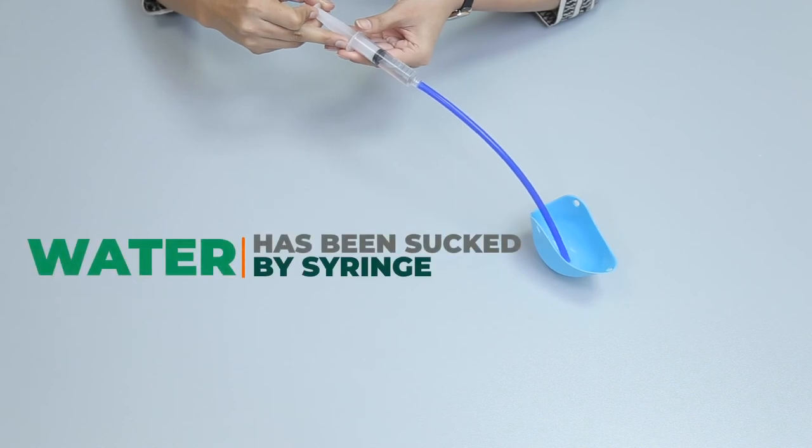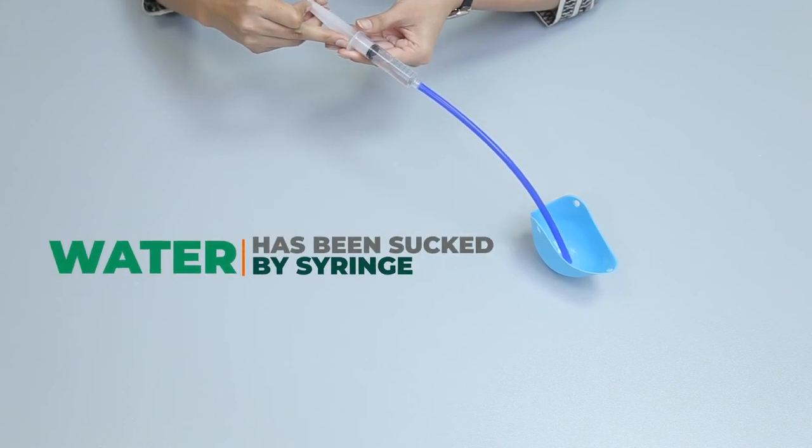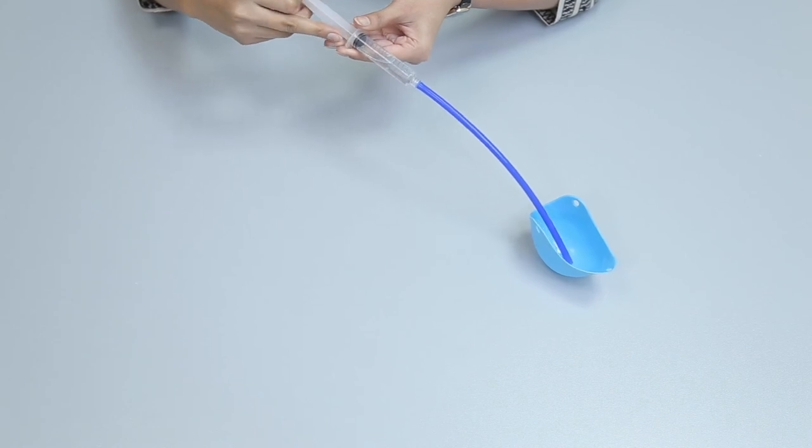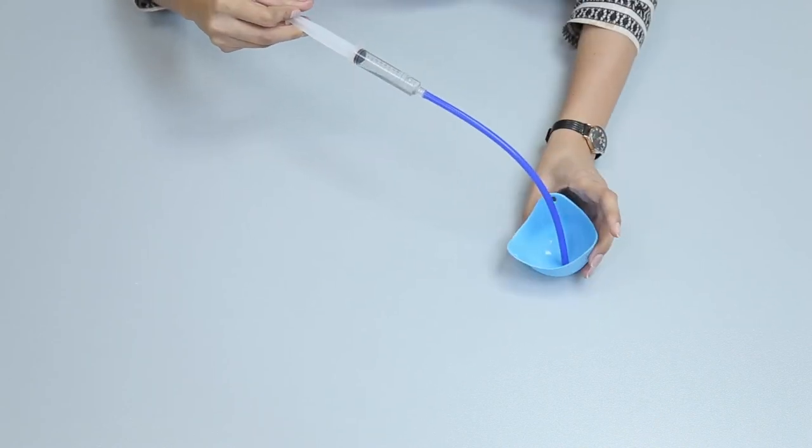We see that water has been sucked by the syringe which shows materials can be taken out by using a suction method as it is used in the vacuum cleaner.